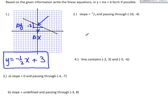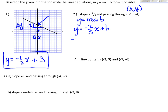The next problem gives me a slope and a point that the line passes through. Starting with y equals mx plus b, I know my slope is negative 2/5, so I plug it in. I don't know b yet, but I know the line passes through the point negative 10, negative 4. Reminding myself that an ordered pair is x comma y, I can plug in that point for x and y.